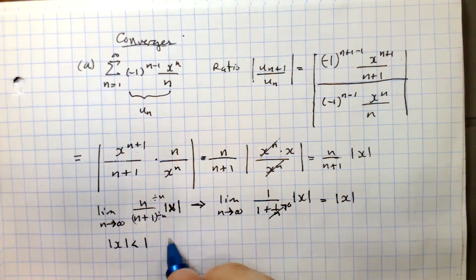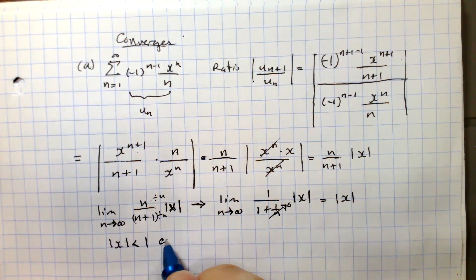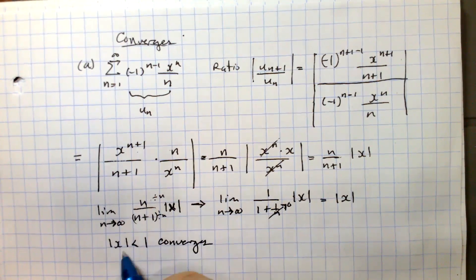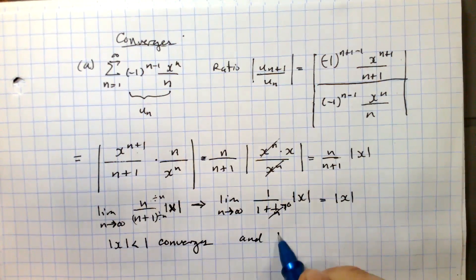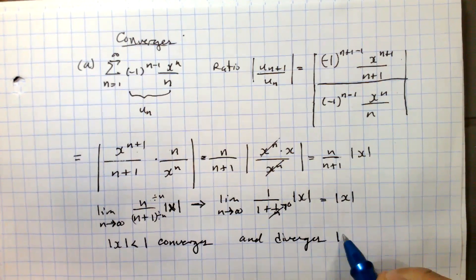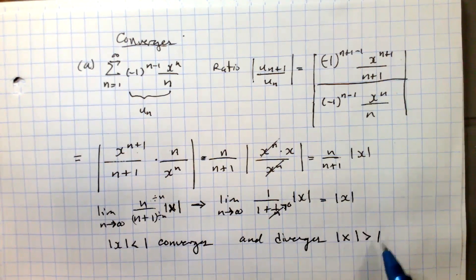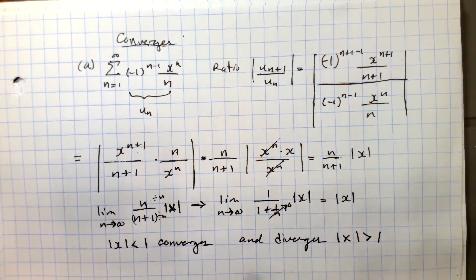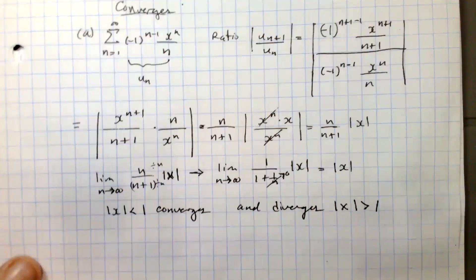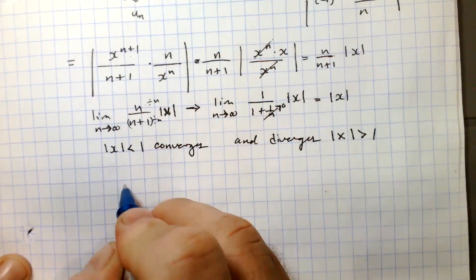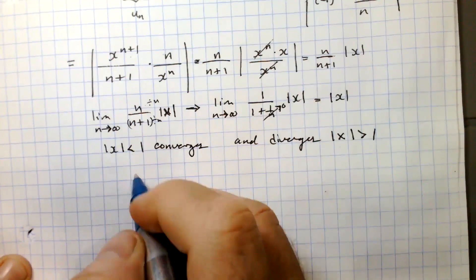The series diverges for |x| > 1. Now let's check the endpoints to determine whether the interval is open or closed at each end.